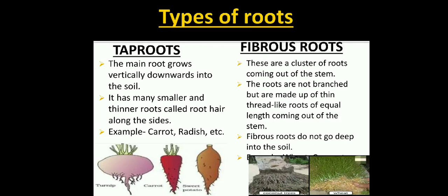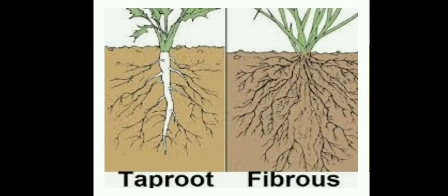Fibrous roots. These are a cluster of roots coming out of the stem. The roots are not branched but are made up of thin thread-like roots of equal length coming out of the stem. Fibrous roots do not go deep into the soil. Example: wheat and grass. In the tap root system, there is a single main root from which secondary and tertiary roots arise. In the fibrous root system, a bunch of roots grow from the base of the stem.